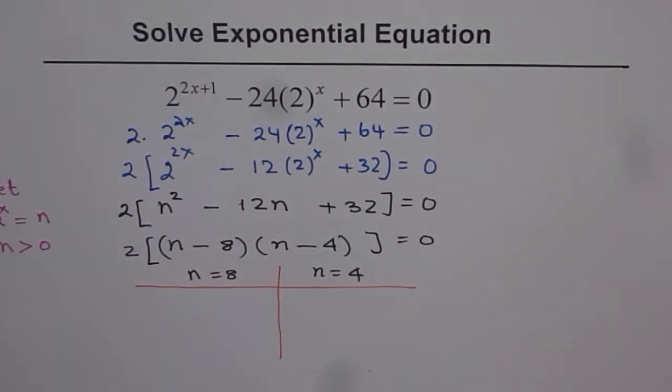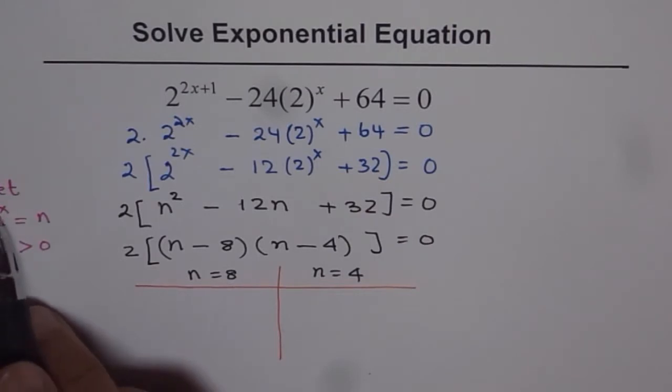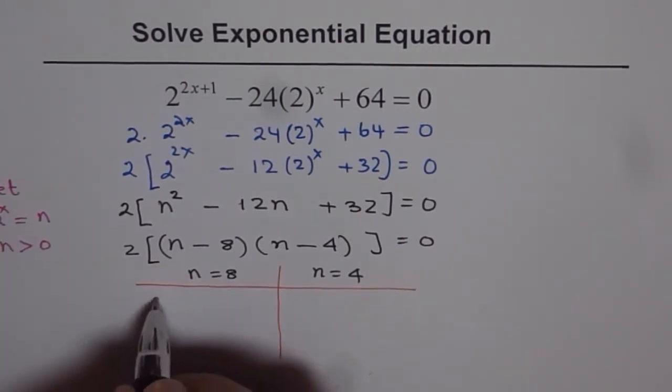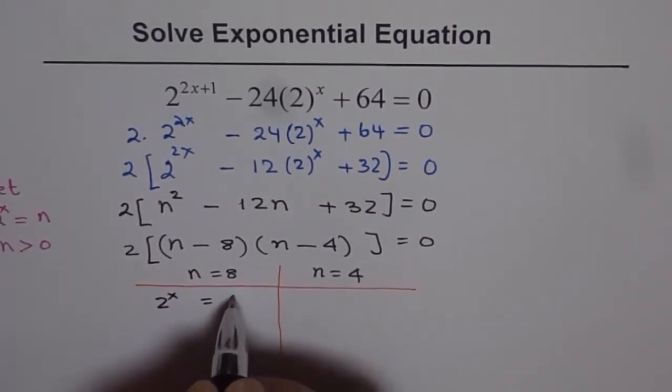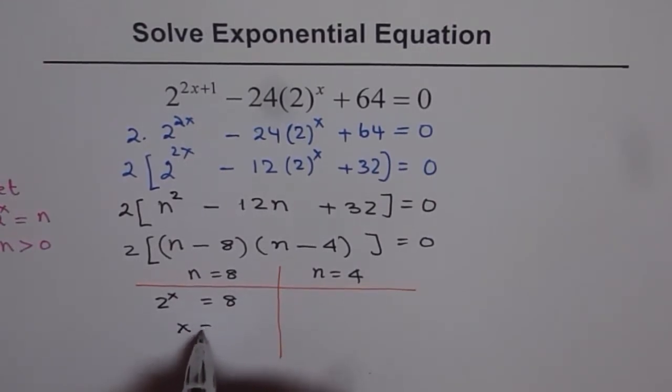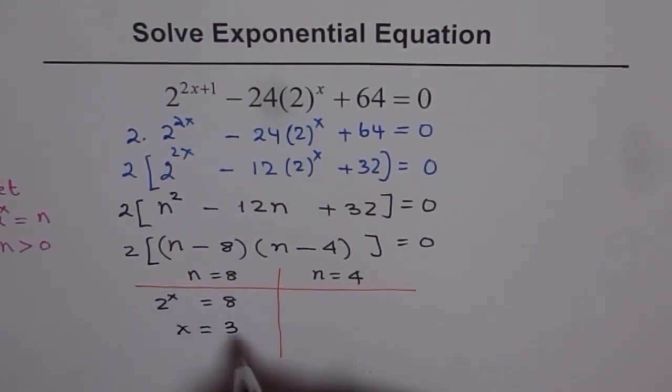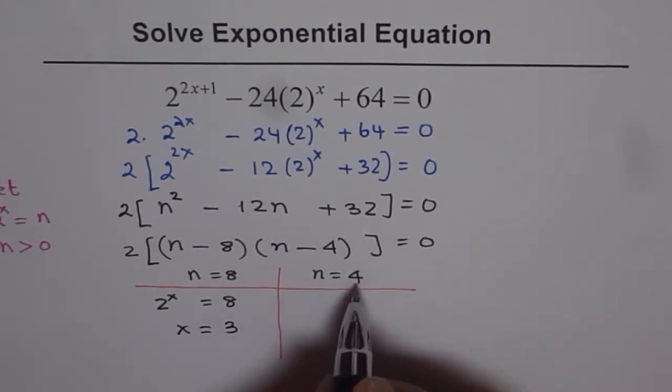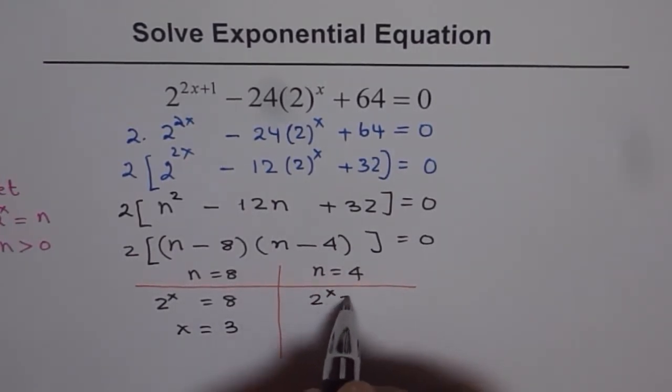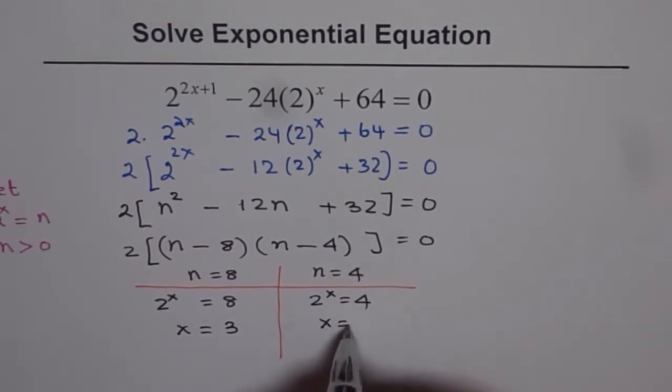Now, if n equals to 8, that means 2 to the power of x is 8. So we have 2 to the power of x equals to 8 and that means x equals to 3. Now, if n equals to 4, that means 2 to the power of x equals to 4, that means x equals to 2.